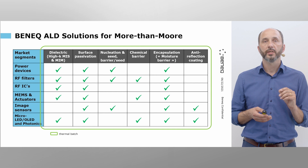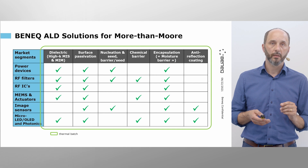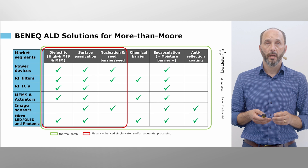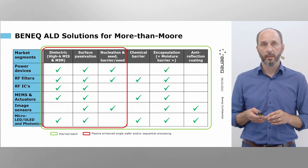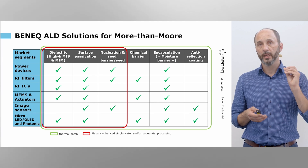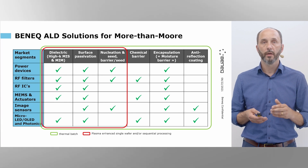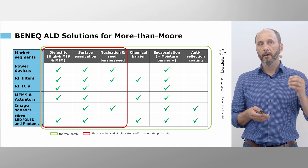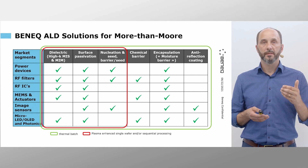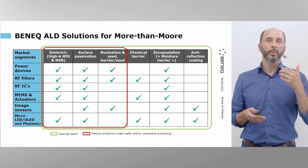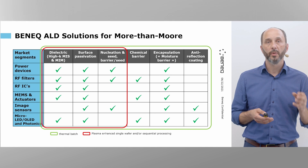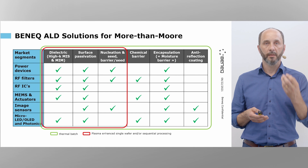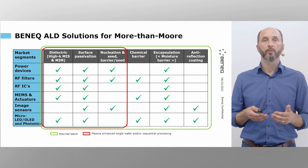We've identified specific interest for plasma to enhance film properties and device electrical properties across three categories. Specifically for compound semiconductor power — for example gallium nitride or silicon carbide — where interface states is an important factor. Plasma clean and plasma deposition combined with oxide deposition provides additional benefits.